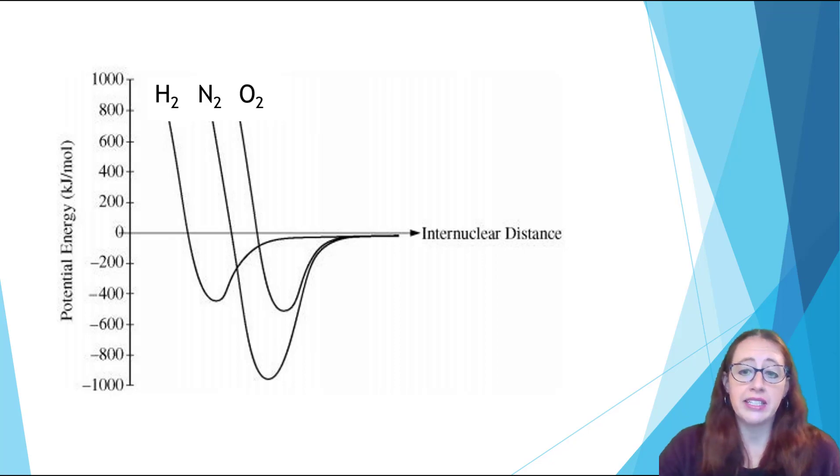So in this graph we see nitrogen with its triple bond being the strongest, which we can see from that deeper potential energy well. Hydrogen and oxygen have very similar bond energies, which you can see from a very similar potential energy well, even though the oxygen has a larger radius. Well, this is because the oxygen is double bonded rather than the single bonded hydrogen.